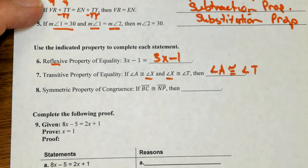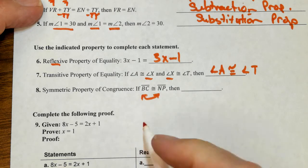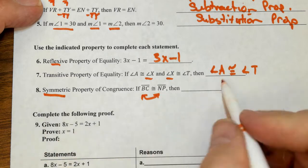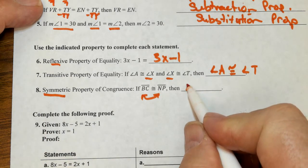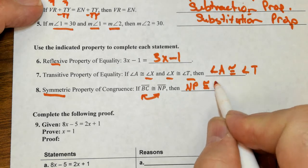Next, symmetric property of congruence. Remember with symmetric, we just swap them out. We're just switching orders here. So this is going to be segment NP is congruent to segment BC.